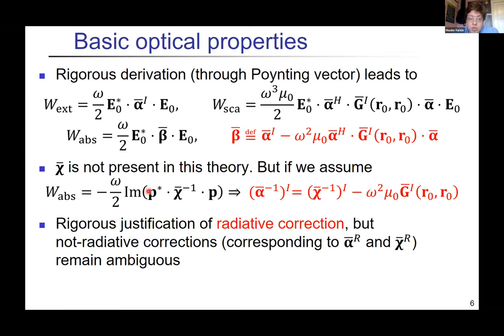If we assume that absorption power is given by this equation, which is logical because absorption is a local property determined by internal fields inside the dipole, and compare this to the expression we derived, we can actually derive the relation between static and dynamic polarizability. Importantly it relates only the imaginary or skew-Hermitian parts of the polarizability. That justifies the radiative correction of the polarizability, but non-radiative corrections remain ambiguous.